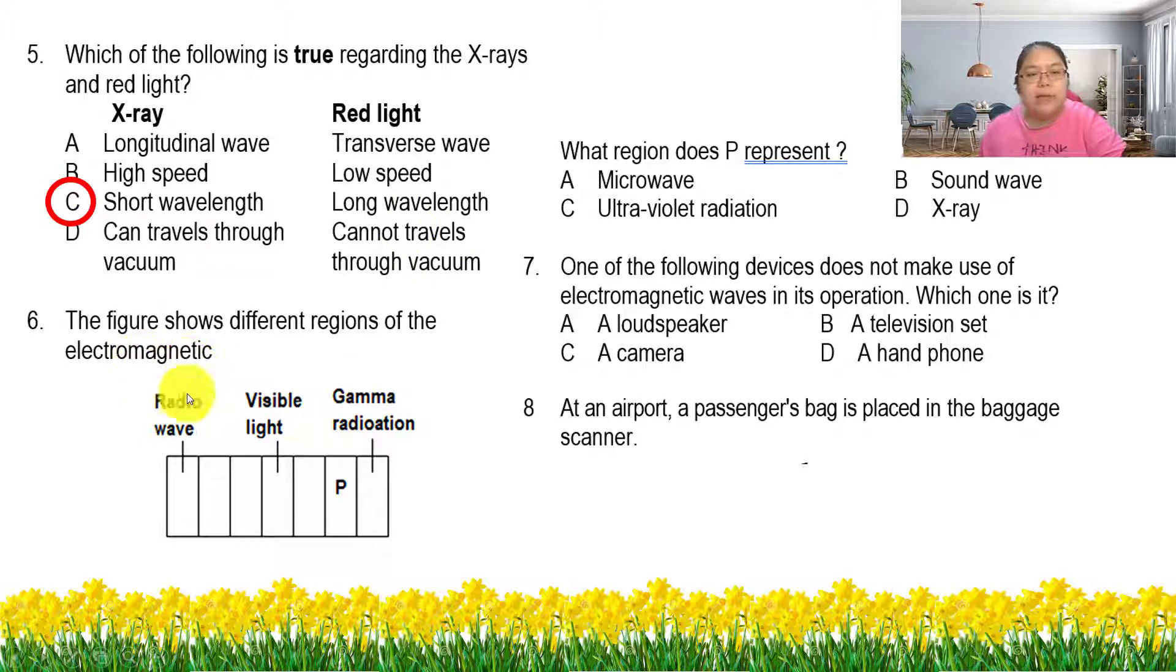Let's see the spectrum. They ask you what's the region for P. This one is gamma. Before gamma is X-ray. Number seven, one of the following devices does not make use of EM in the operation. Camera, yes, that's visible light. TV set, yes, that's using infrared.